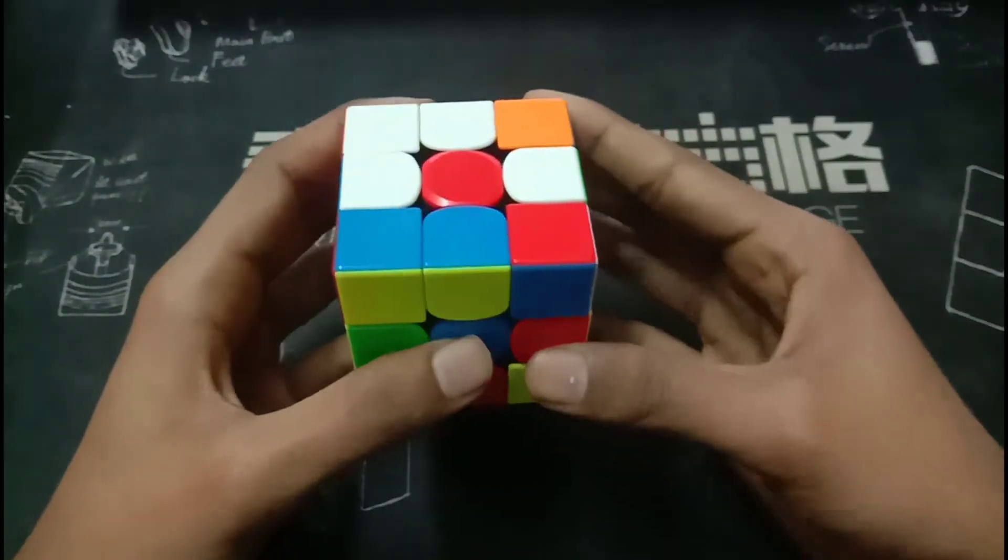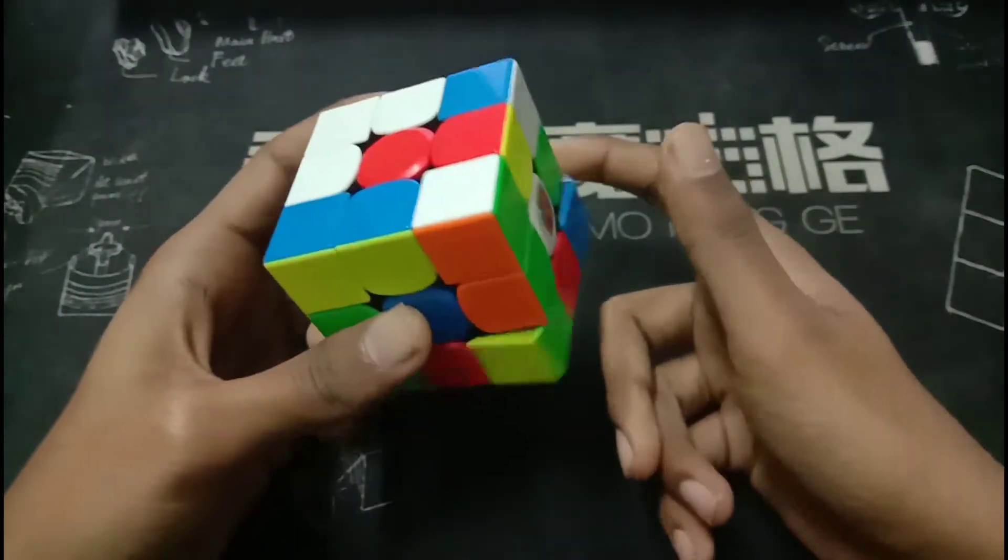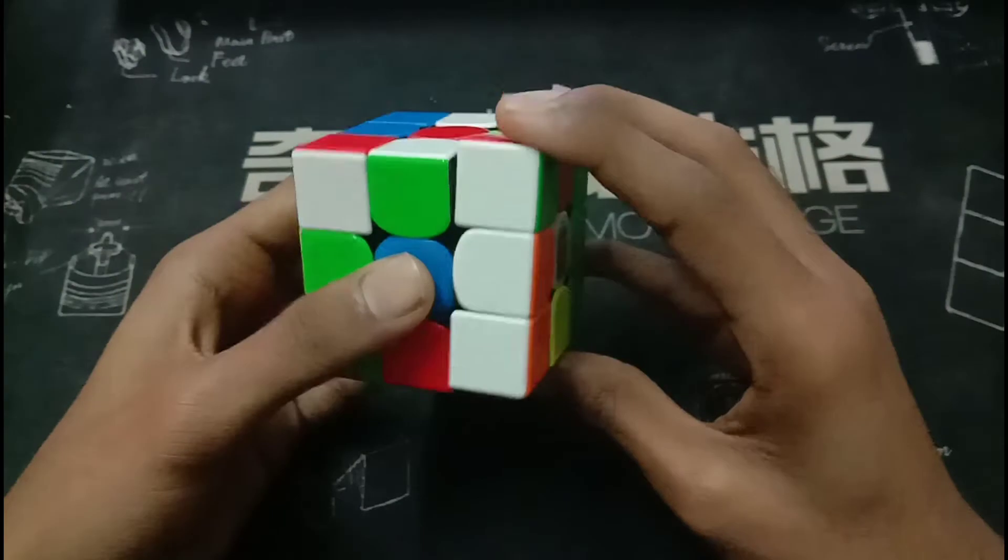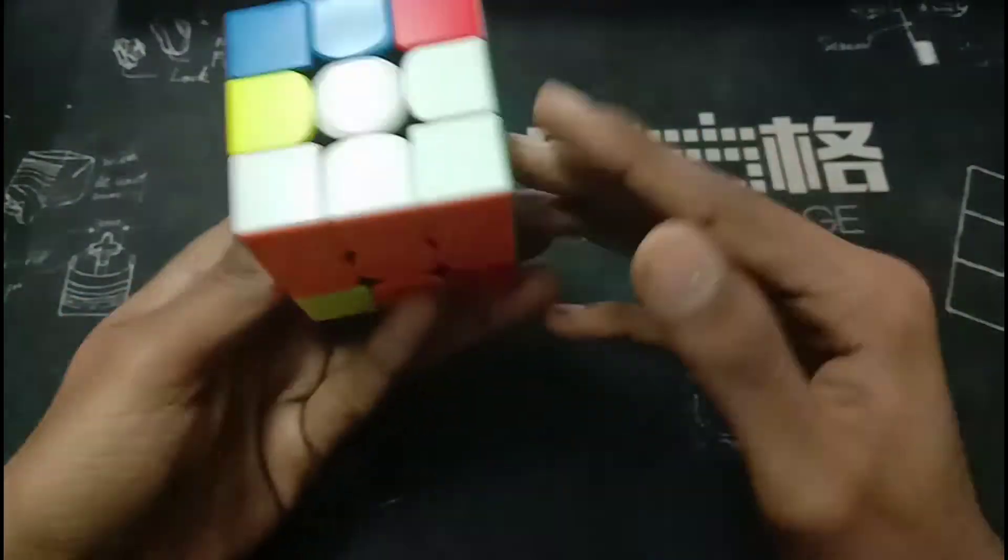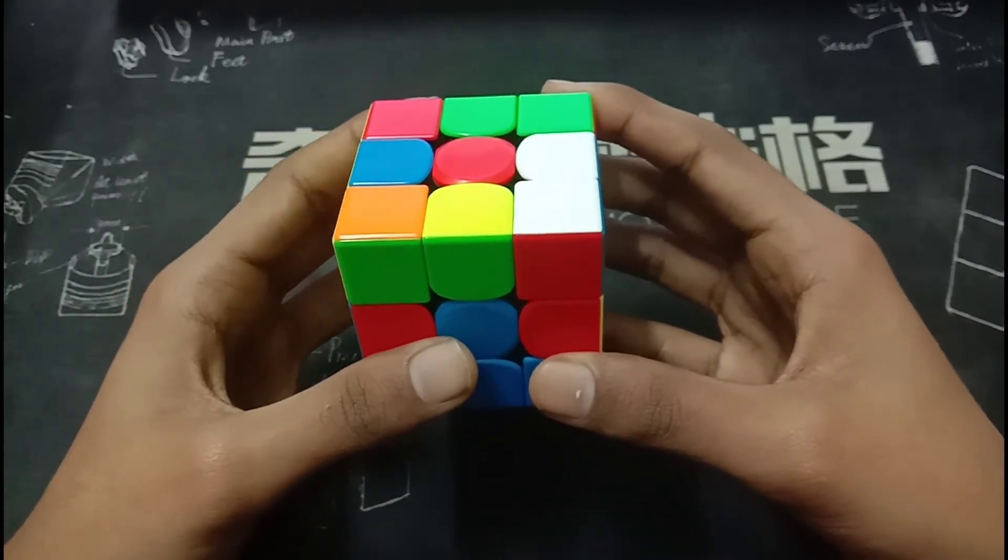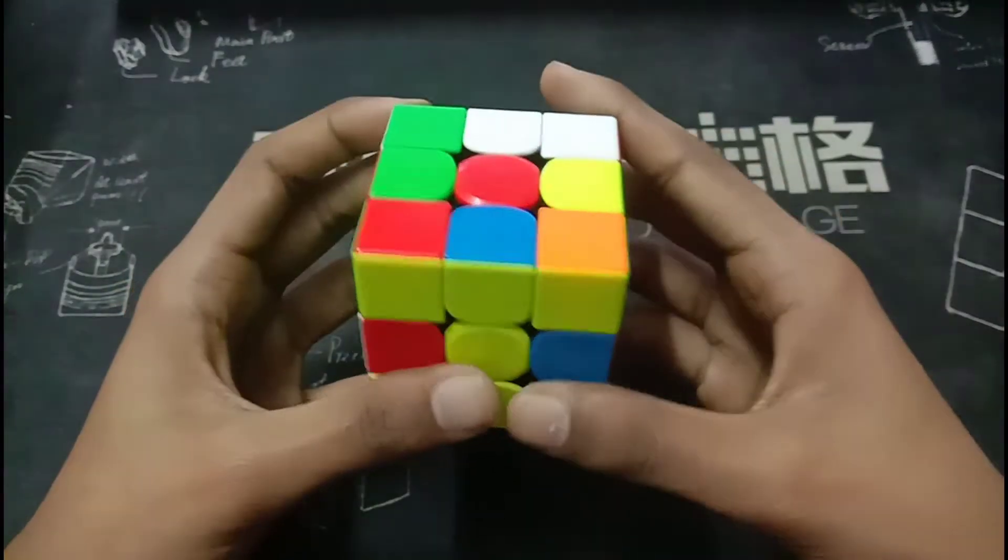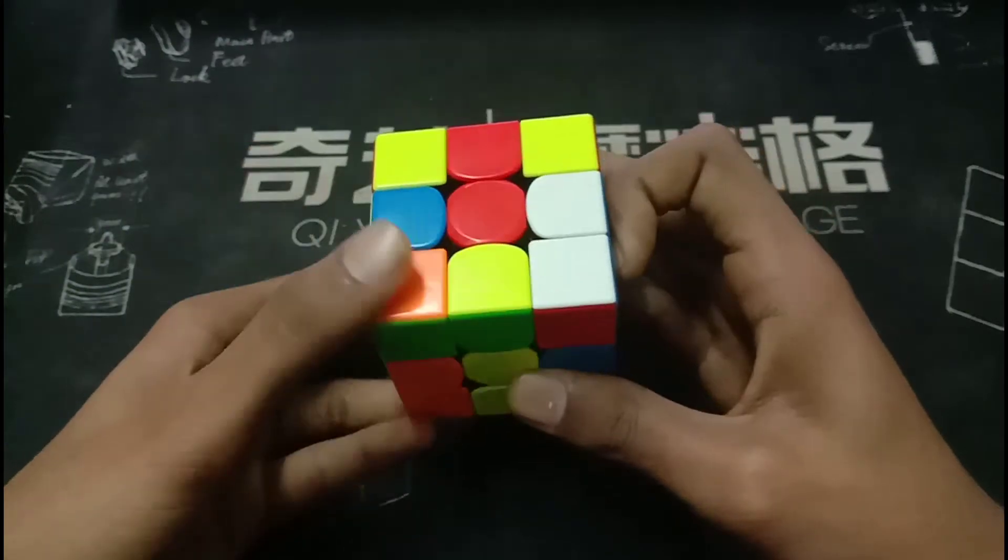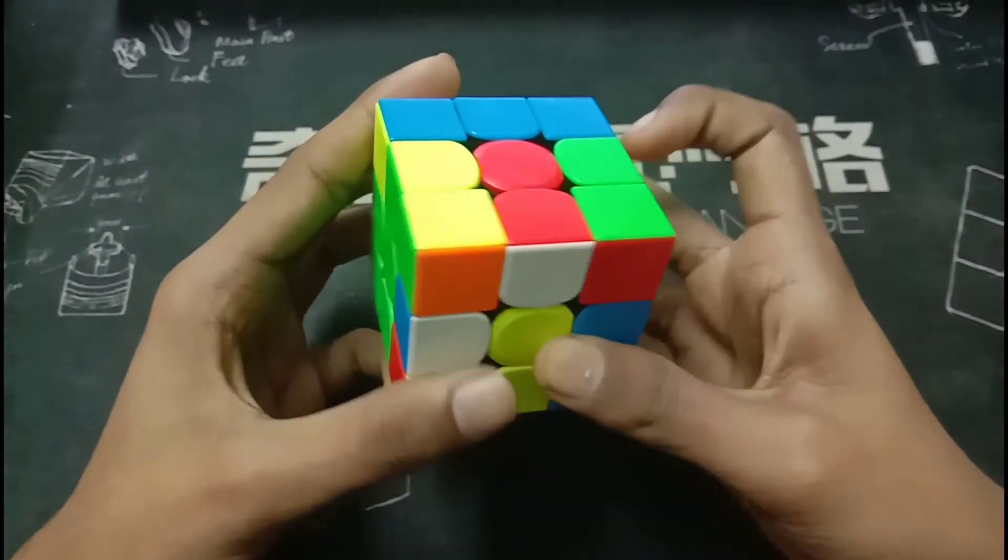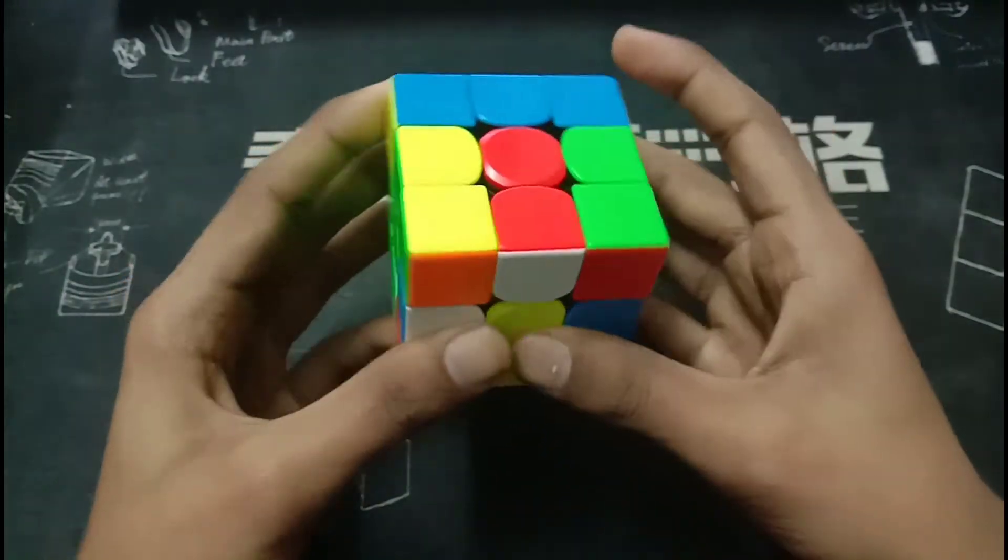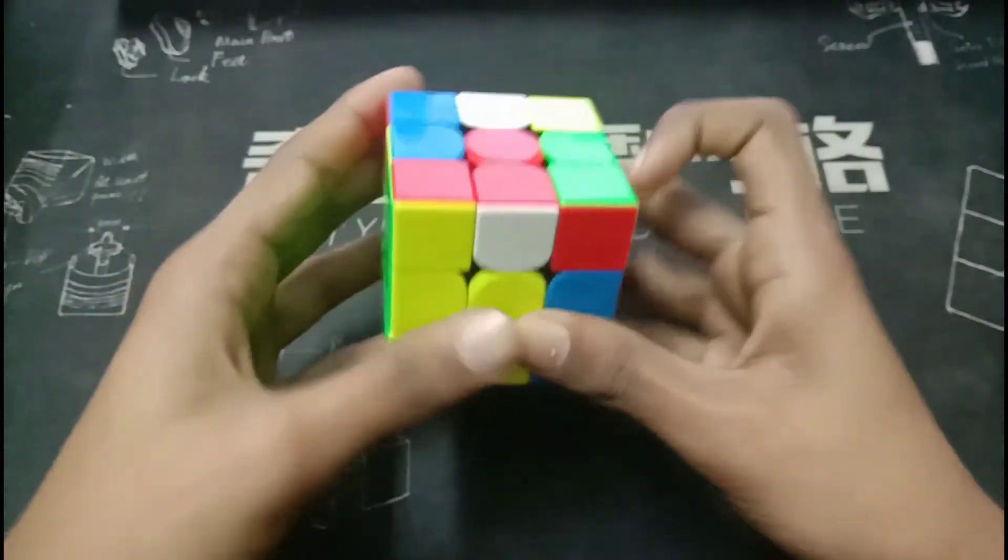So what he does is to make the X cross in the back. Now what he can do is he rotates to make this pair and then he inserts it into the front.